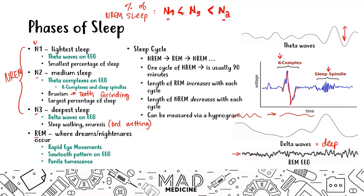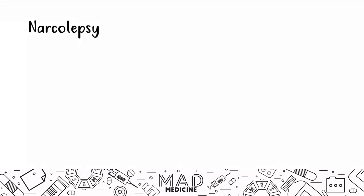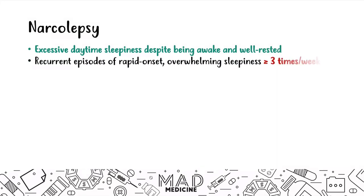Now, narcolepsy. Narcolepsy is one of the main disorders you're going to see on step one. It is characterized by excessive daytime sleepiness despite being awake and well-rested. It's characterized by recurrent episodes of rapid onset, overwhelming sleepiness at least three times a week for greater than three months. Three times a week and three months is very important.